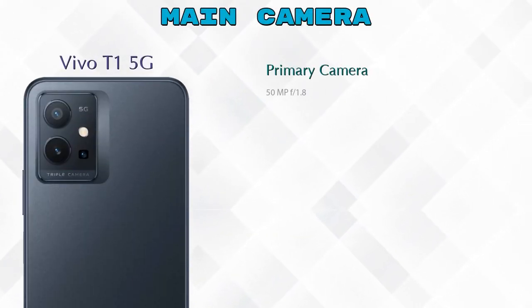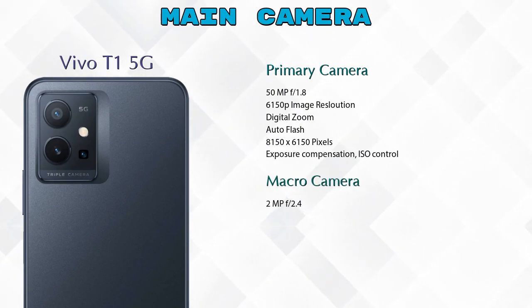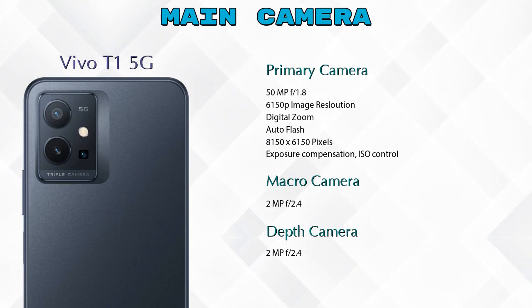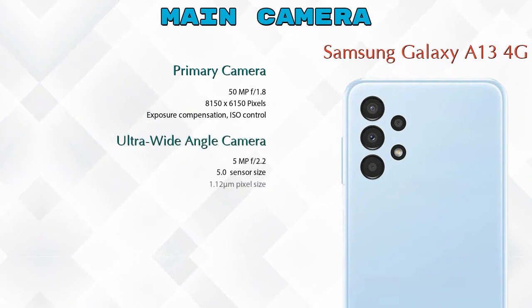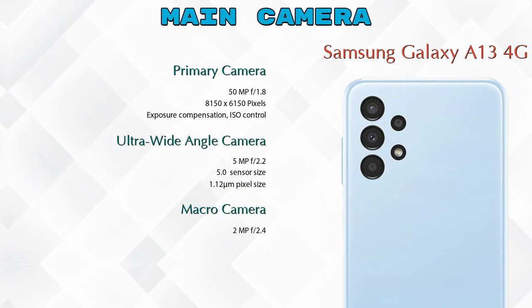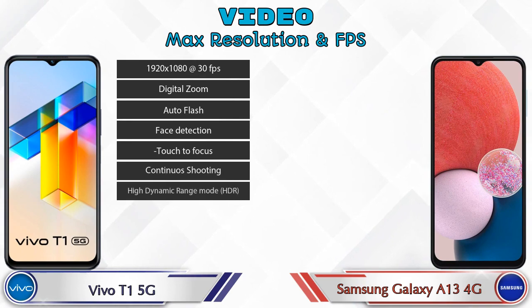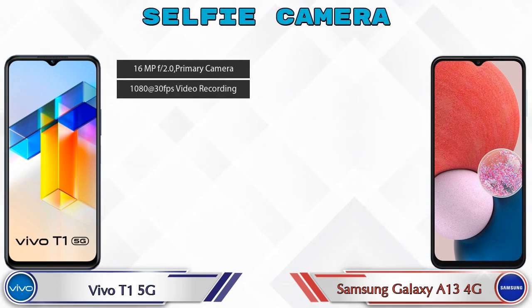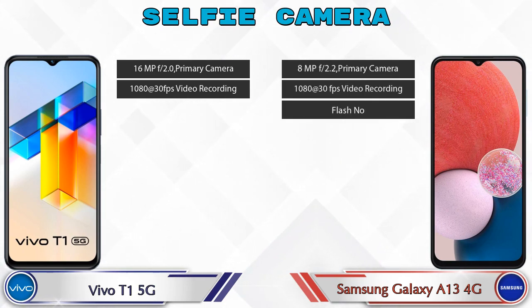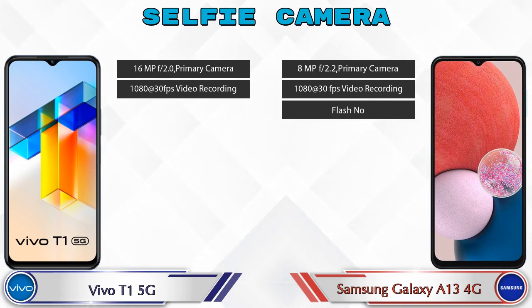Now let's talk about cameras. For the rear camera, the T1 5G has three cameras: a primary camera, macro camera, and depth camera. The Galaxy A13 4G has four cameras: a primary camera, ultra-wide angle camera, macro camera, and depth camera. For video, both phones offer seven different feature options. For the front selfie camera, the T1 5G has a single camera with two features, while the Galaxy A13 4G also has a single camera but with three features.